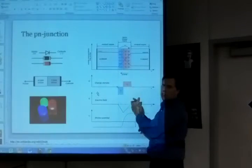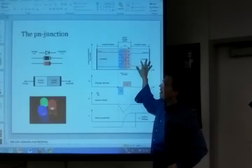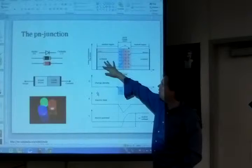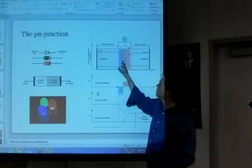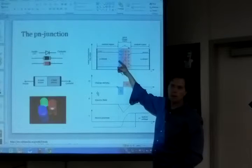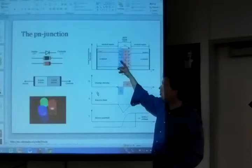This PN junction here, what happens is the excess electrons over here looking for a place to go find it over in the P type material. Right on this boundary, the electrons jump and fill in those missing holes.